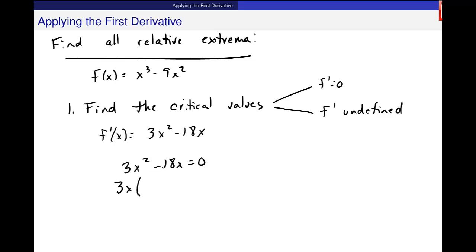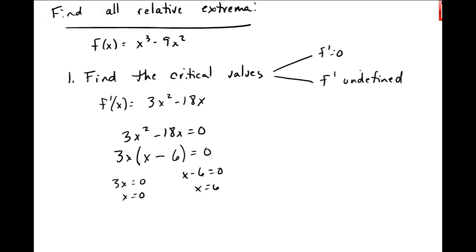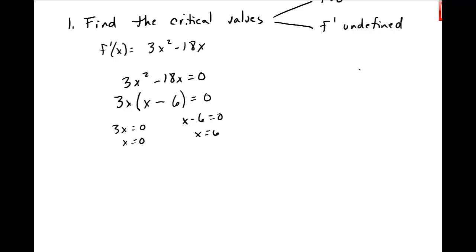I think I can factor out a 3 and an x. And when I do that I'm left with an x here and 3 out of 18 is 6. So I get 3x equals zero or x minus 6 equals zero. x equal to zero and x is equal to 6.